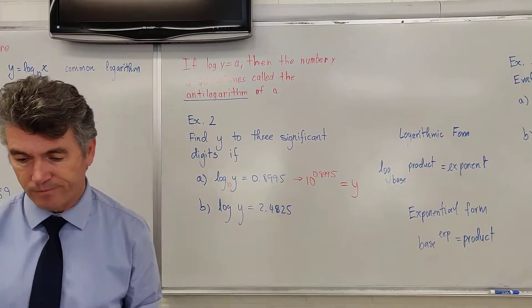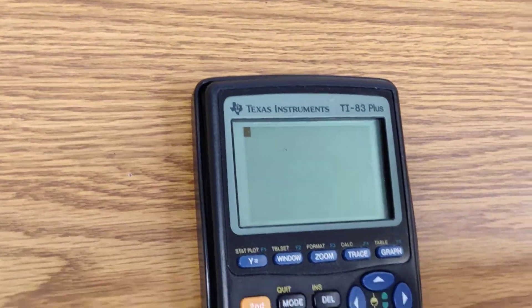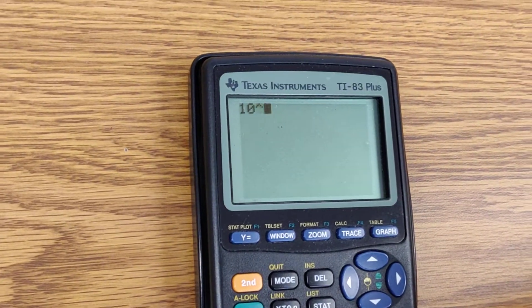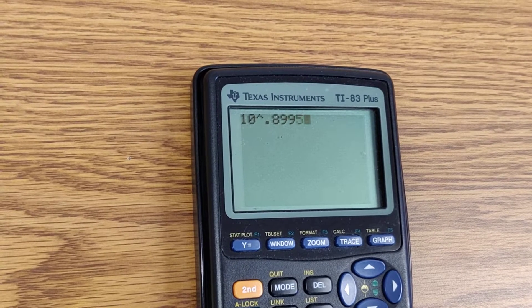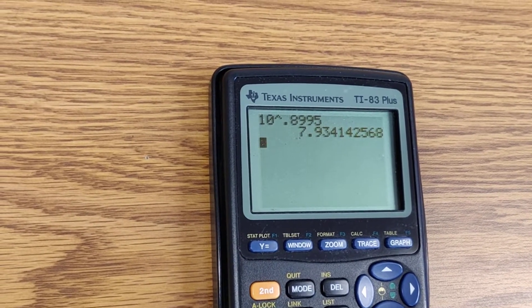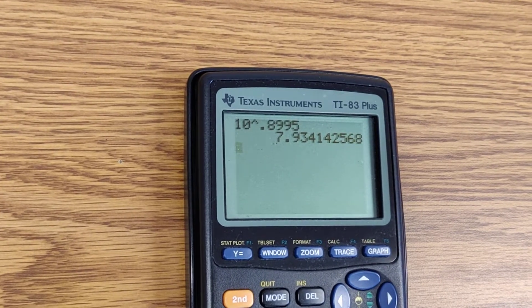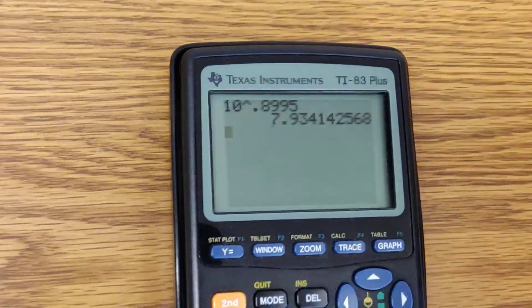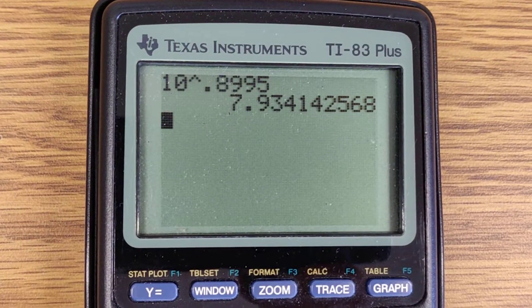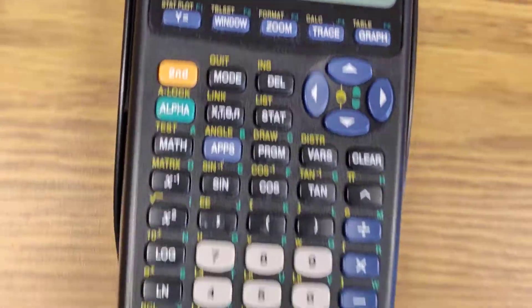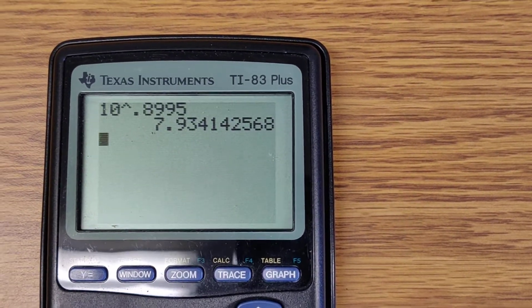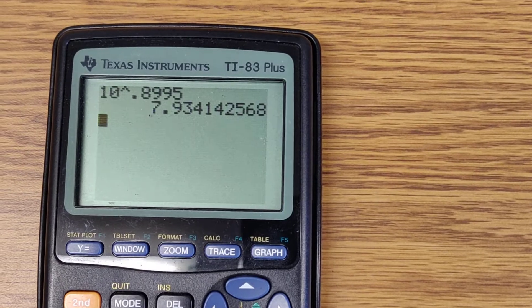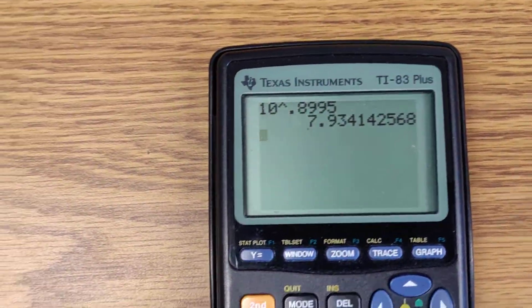Take your calculator, turn it on, and calculate 10 raised to the power of 0.8995. Make sure you enter a 3 significant digit answer. So this is 7.93. So 7.93 equals y. You are done. There is nothing more to do about this problem.